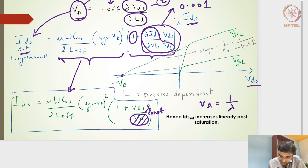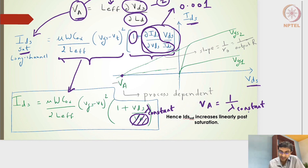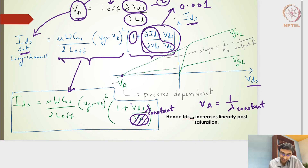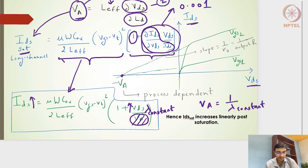Note that this λ is not the same lambda used in design rules where 2λ = 50 nm — it is a different constant. VA is essentially a fabrication constant. An increase in VDS leads to an increase in IDS, which is why the saturation profile shows a positive slope after the saturation point.